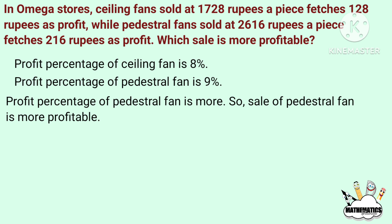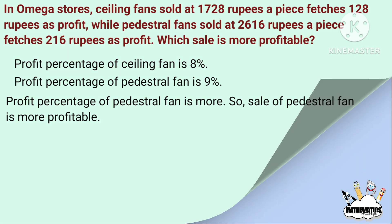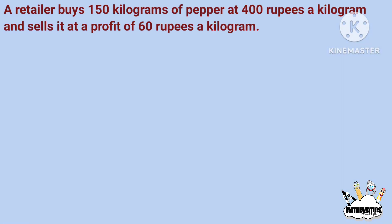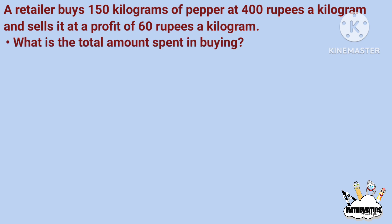A retailer buys 150 kilograms of pepper at Rs.400 per kilogram and sells it at a profit of Rs.60 per kilogram. The buying price is Rs.400 per kilogram and the profit per kilogram is Rs.60.